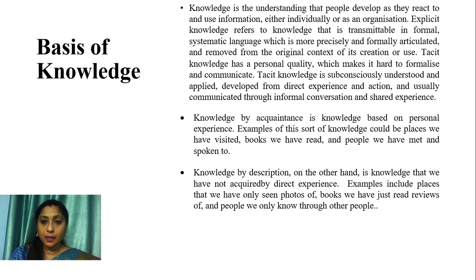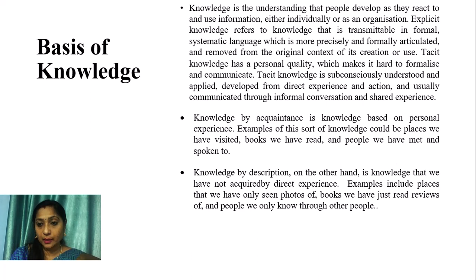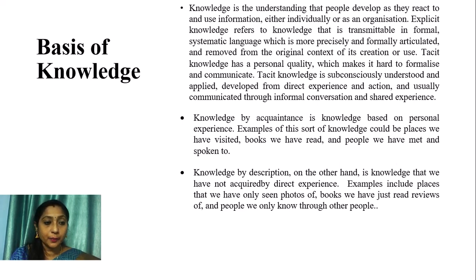Knowledge by acquaintance is knowledge based on personal experience — examples include places we have visited, books we have read, and people we have met. Knowledge by description, on the other hand, is knowledge not acquired by direct experience — examples include places we have only seen photos of, books we have only read reviews of, and people we know only through other people.